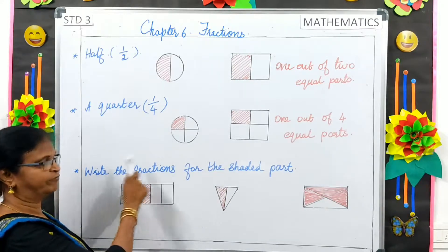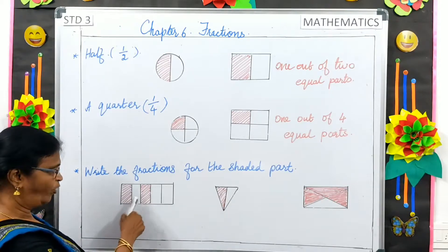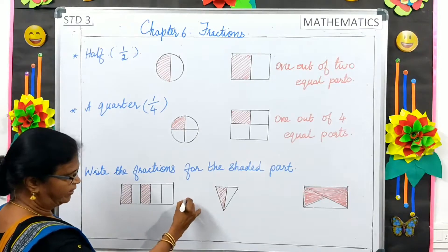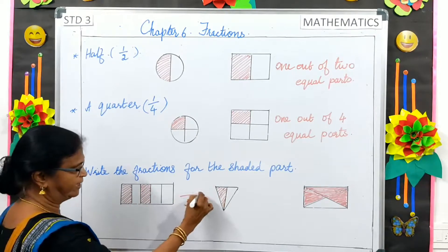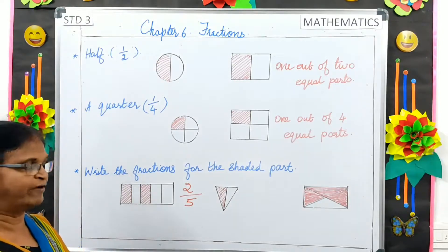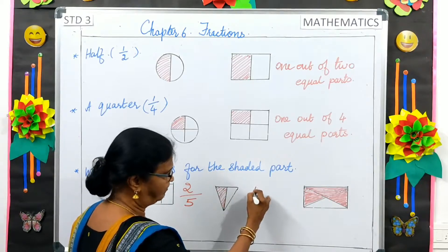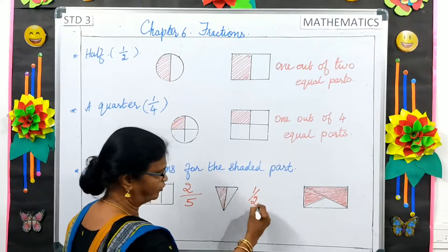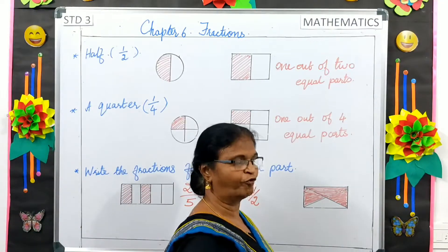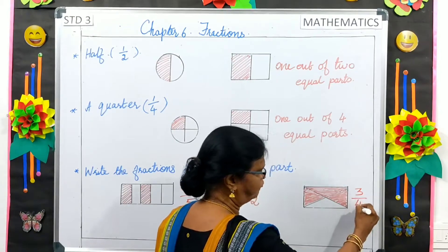Now, write the fraction for the shaded part. We have divided the whole into 5 here, so that 5 is the denominator and 2 parts are shaded. That is 2, so it is 2 by 5. Here, the whole is divided into 2 and 1 part is shaded, so that is 1 by 2. Here, the whole is divided into 4 and 3 parts are shaded, so that is 3 by 4.